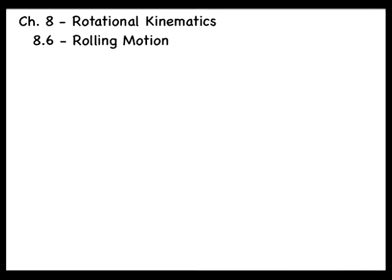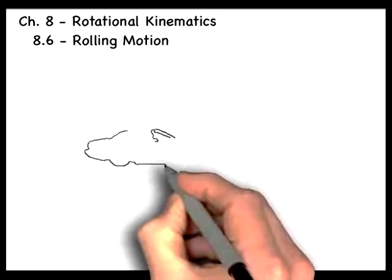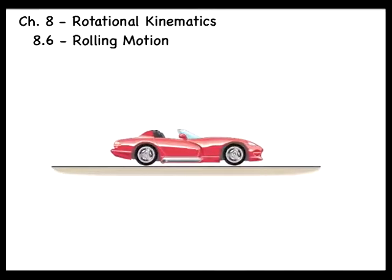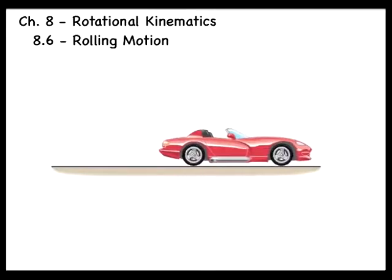In this section we discuss the concept of rolling motion. Consider the rotating tires of a car undergoing a linear displacement. There must be a relationship between the angular motion of the tires and the linear motion of the car.